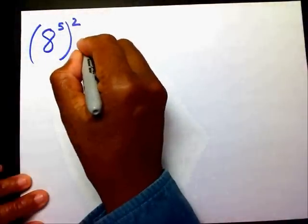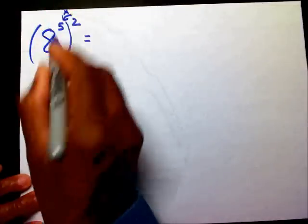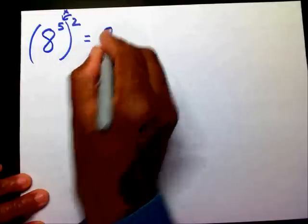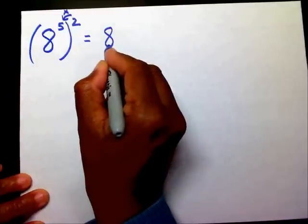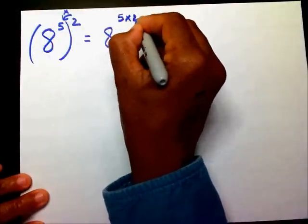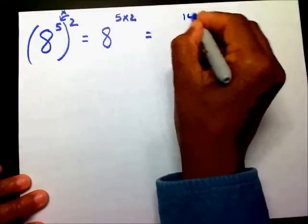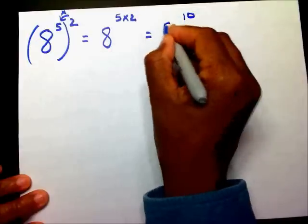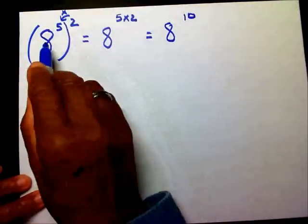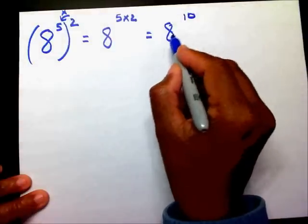Since I have an exponent on the inside and an exponent on the outside, I'm going to multiply my two exponents. I'm going to bring my eight over and multiply five times two. What is five times two? That's going to give me ten as my new exponent. So eight to the fifth power raised to the second power is eight to the tenth power.